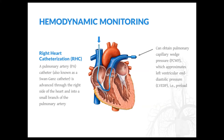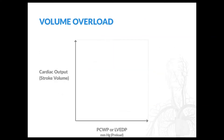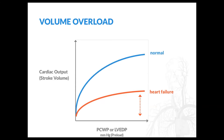For most patients, the classification of hemodynamic subset is made based on their clinical signs and symptoms. Starting with volume overload — patients with heart failure have a flatter Frank Starling curve due to impaired ventricular performance. As a result, increases in preload in patients with heart failure don't produce the same improvements in stroke volume and therefore cardiac output observed in normal patients. However, it does result in the signs and symptoms of volume overload.